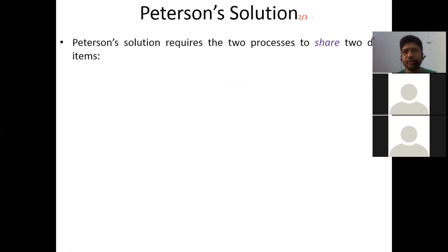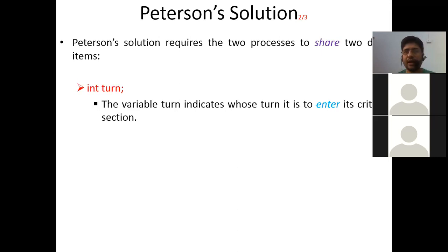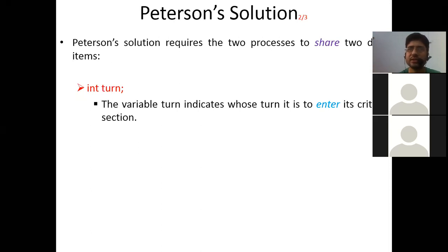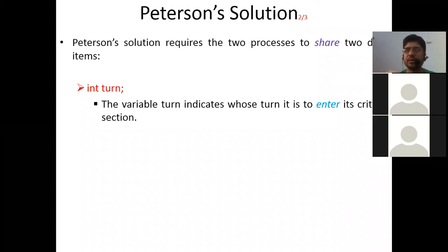We have seen that we use two shared data variables. The first one is int turn. The turn variable gives you the authority — it indicates whose turn it is to enter the critical section. P0, before entering its critical section, puts the turn value to 1 and asks P1: would you like to go into the critical section?